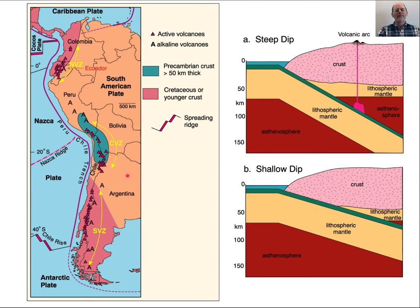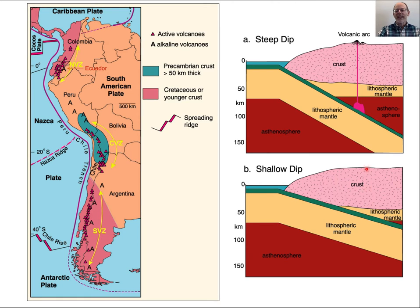Here is the Andean subduction system, which has some really interesting features. The crust is different ages — young up here, really old and thick in the middle, and young down here. The dip of the slab also varies: steep dip in some areas, but a really shallow dip in others. Where it has a shallow dip, there's no volcanic arc and no magmatism at all — this is sometimes called flat slab subduction.